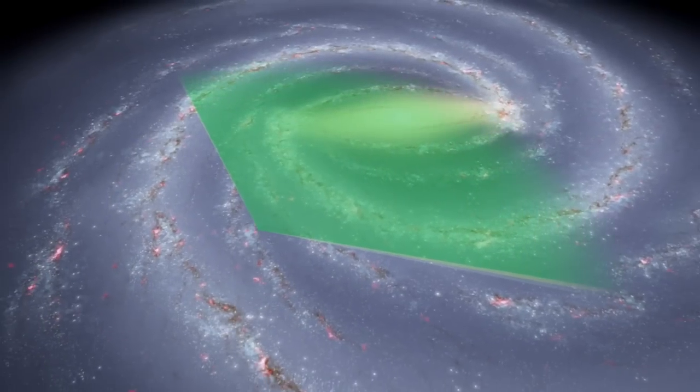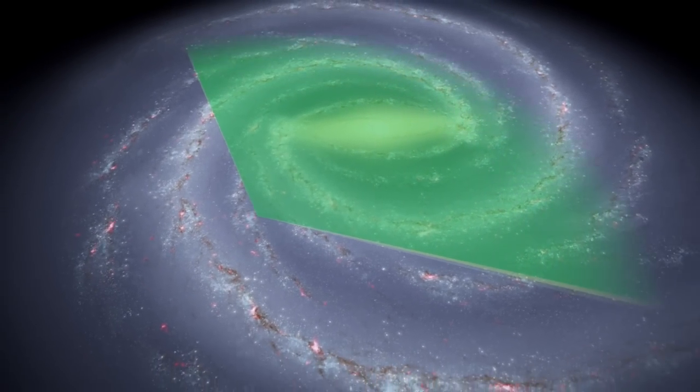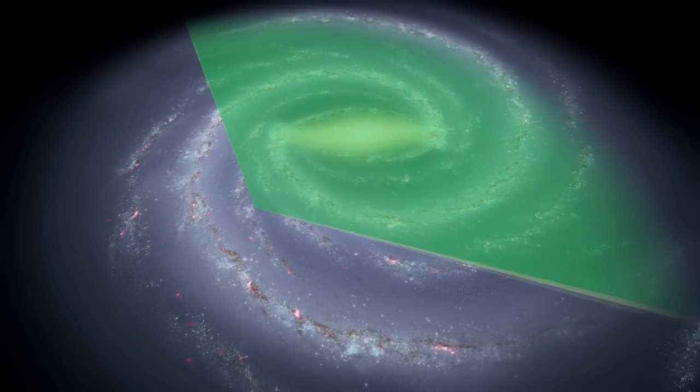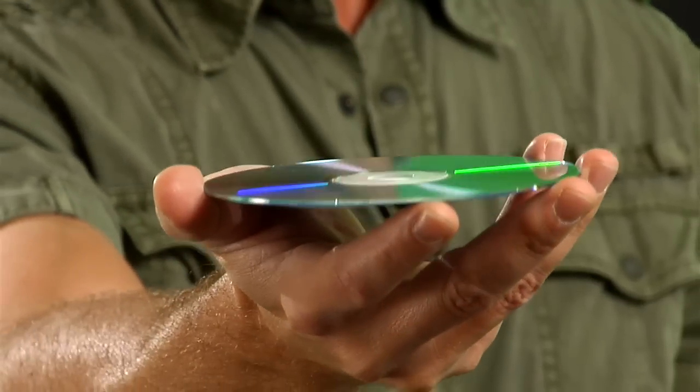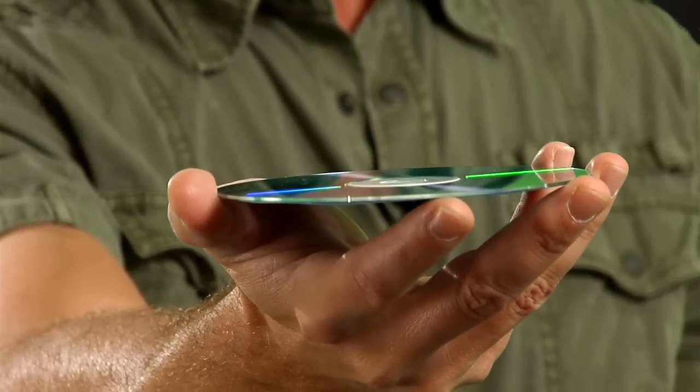Our sun sits a ways out from the galactic center, so a 130-degree arc takes in most of its area. Though our Milky Way is actually very thin compared to its diameter, a lot like a CD. So even a 2-degree-wide scan is going to include most of its disk.